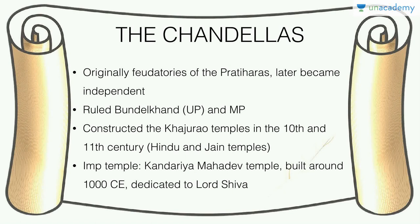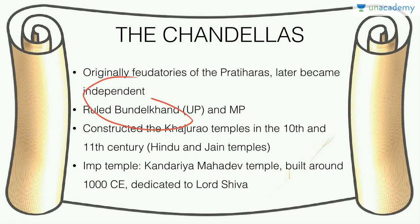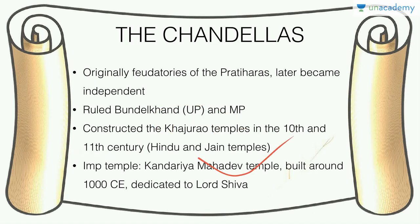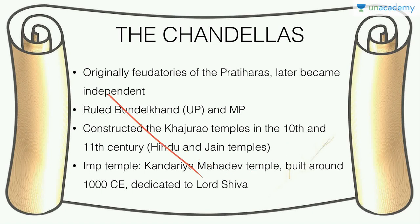The Chandelas were originally feudatories of the Gurjara-Pratiharas but later asserted independence, ruling Bundelkhand in UP and MP. They constructed the Khajuraho temples in MP in the 10th and 11th century. These are very important — please look at the images and appreciate the beauty and open-mindedness of our ancient civilizations. The Kandaria Mahadeva temple at Khajuraho was built around 1000 CE and is dedicated to Lord Shiva.